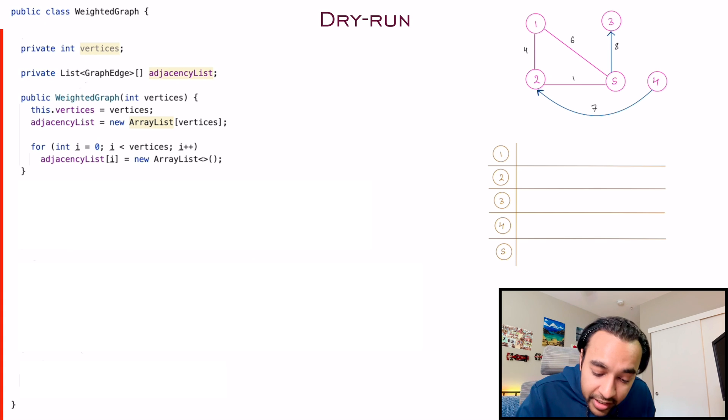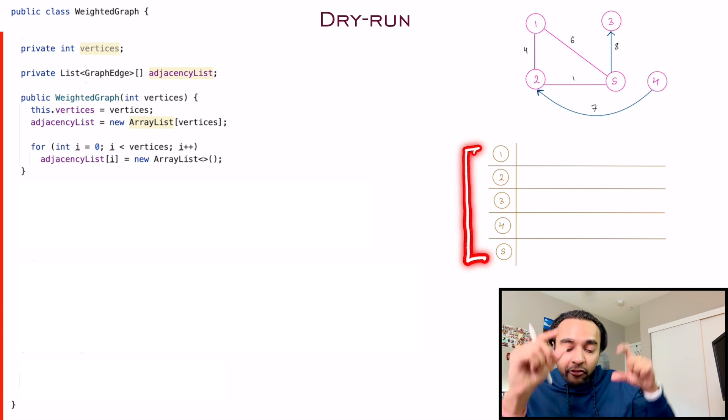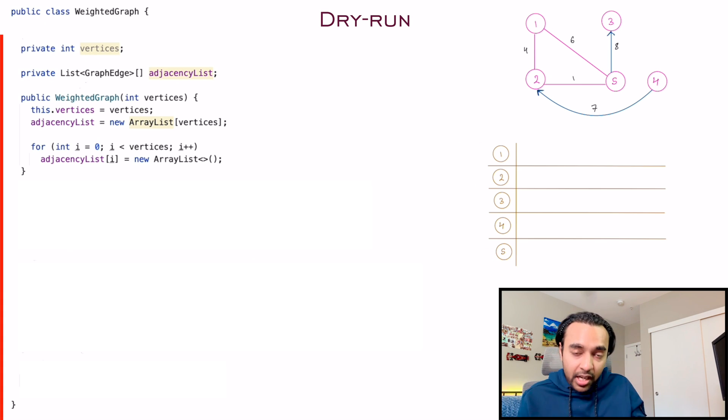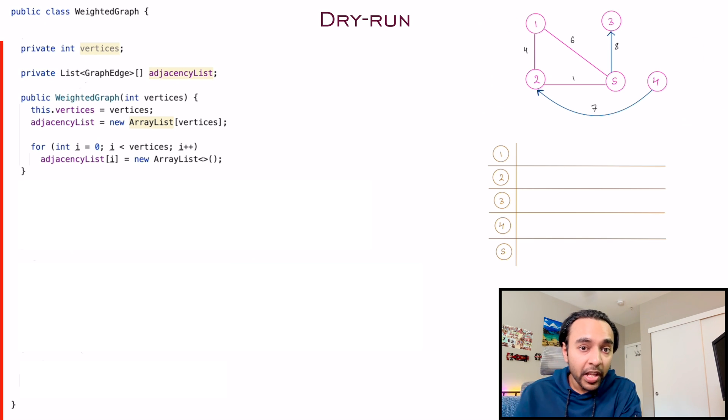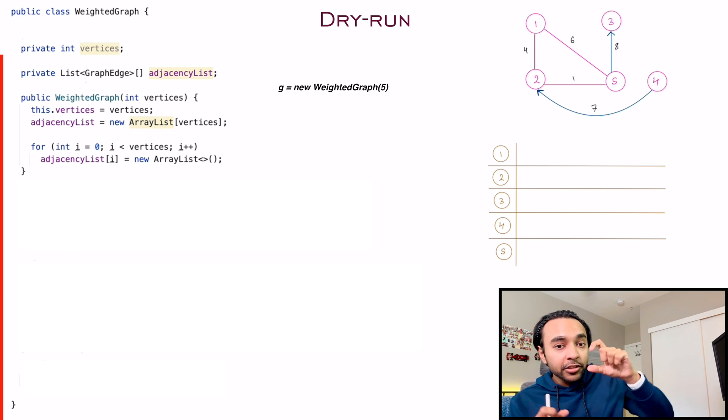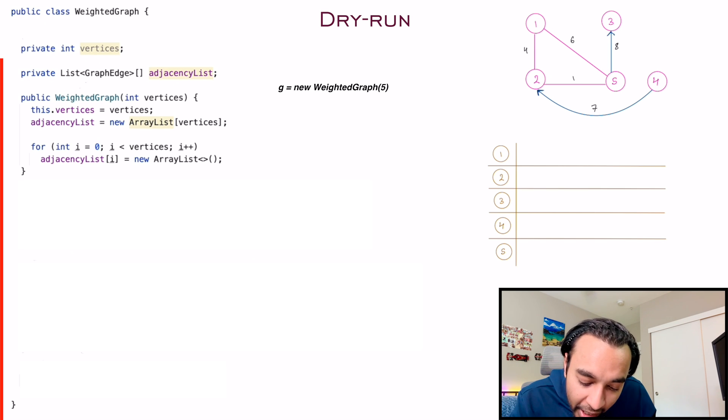So what I'm doing over here is I am creating an array with all the number of vertices. Just notice that this is the target graph that we have to reach. So what we're going to do is we are going to say something like graph is equal to new weighted graph, and then we will pass in five. So that will create this new adjacency list, which has five vertices.